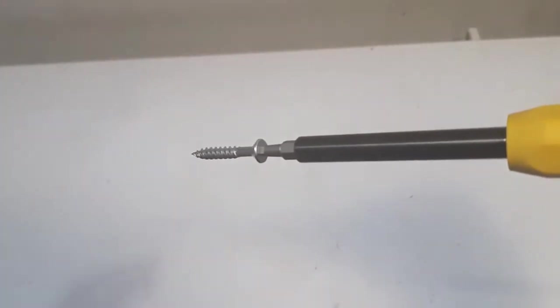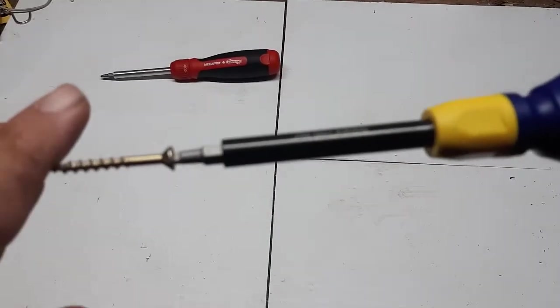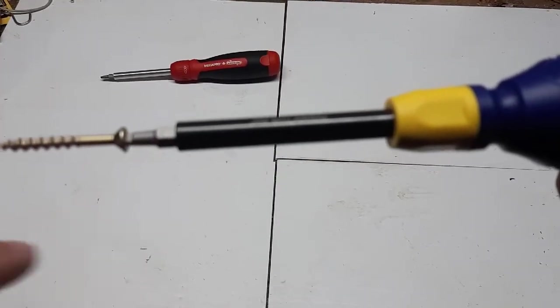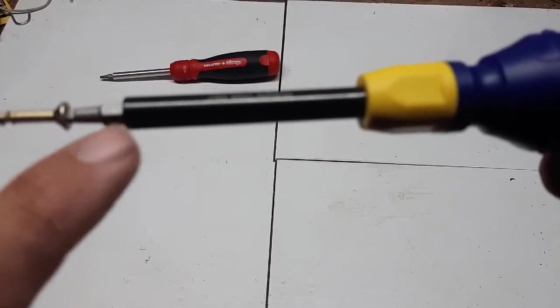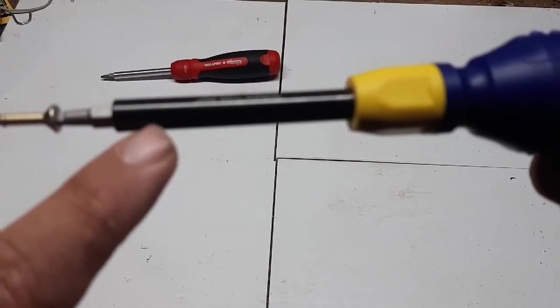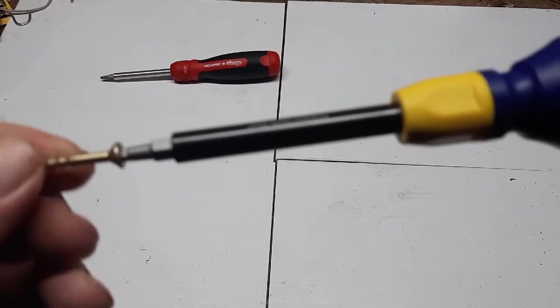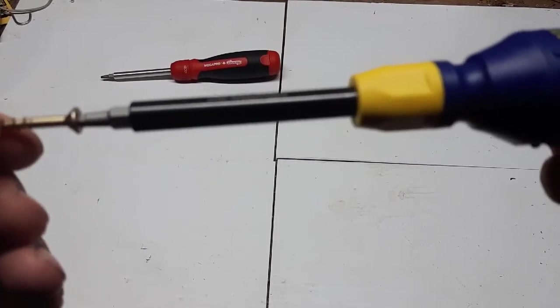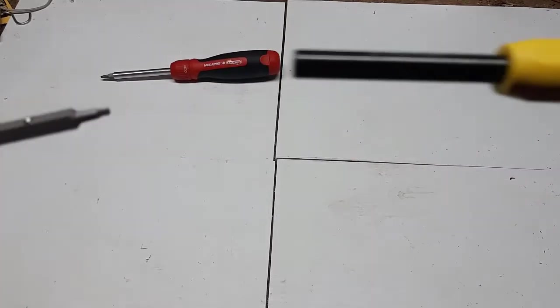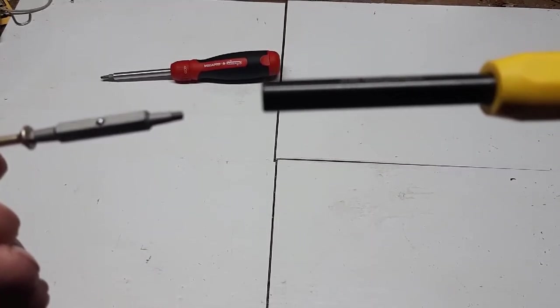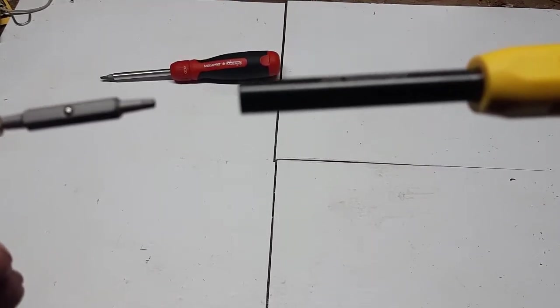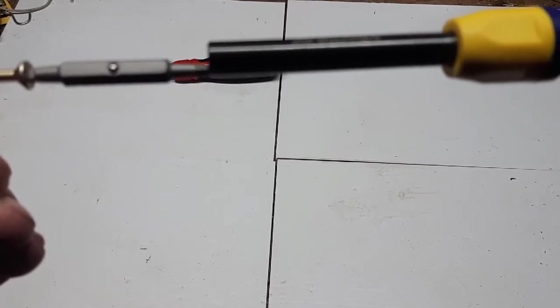So these bits are non-magnetic and they have a ball bearing that holds it inside the shaft of the Megapro Original. Now just be aware that if you get a screw that's tightly fit inside here, it can pull your bit out, so just be aware of it—it will pull out occasionally.